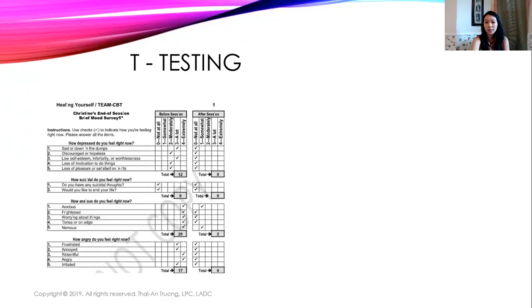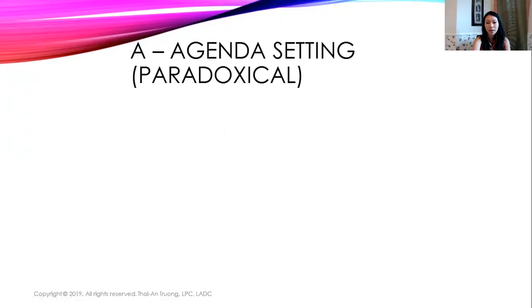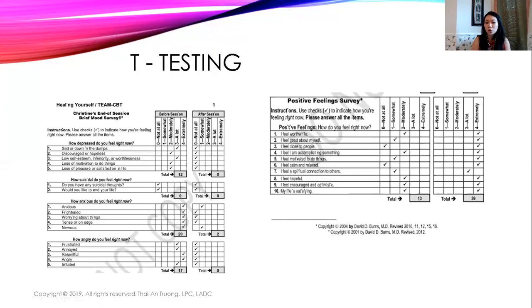These are the testing forms we use in TEAM CBT — the Brief Mood Survey. Every session we measure their anxiety, depression, suicidal thoughts, anger, and positive feelings. Eventually we want to see them not just feel less terrible, but also feel more positive about life and themselves. This is in Dr. Burns' toolkit — once you purchase the license, you can make copies and use this measurement for the rest of your life.